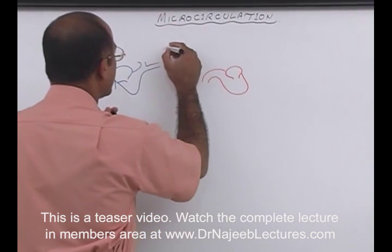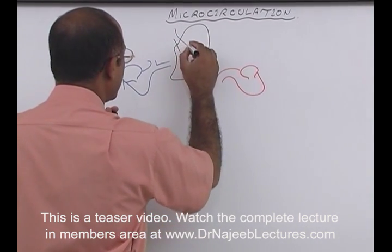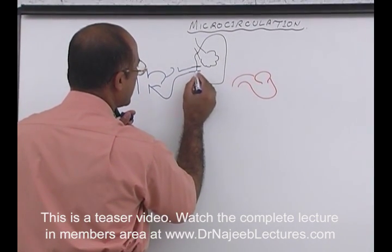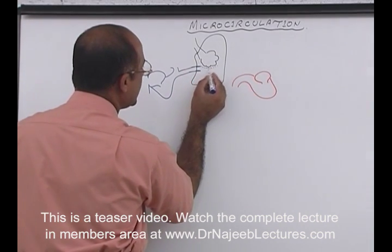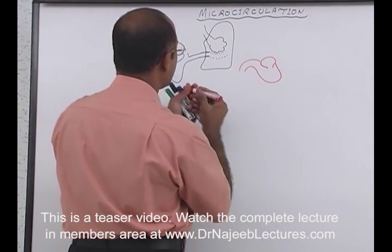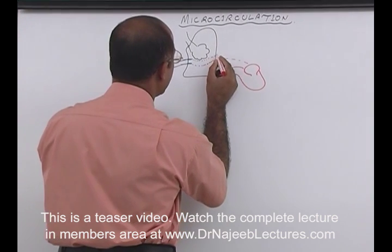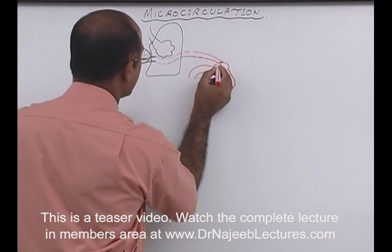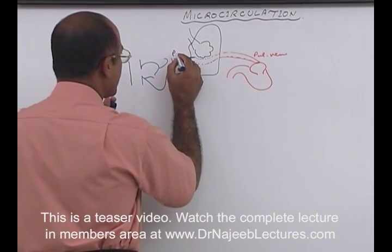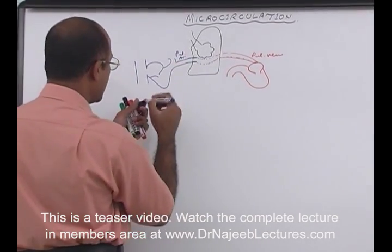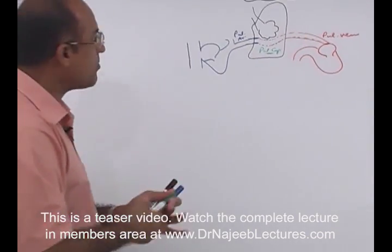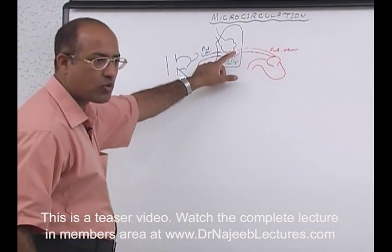In the pulmonary circulation, these are the air spaces. The pulmonary arteries break down into pulmonary capillaries, and eventually oxygenated blood from the pulmonary capillaries goes to the left heart through the pulmonary veins. The pulmonary capillary bed is the microcirculation of the lungs — the pulmonary microcirculation.